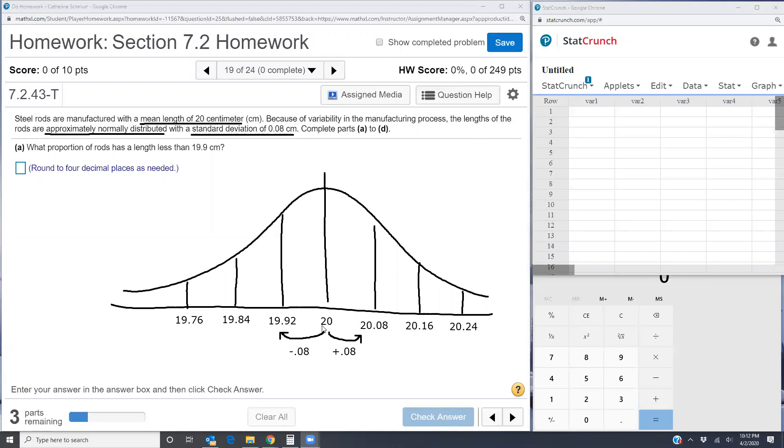To the left of the 20 is 19.92, 19.84, and 19.76 by subtracting the standard deviation to the left.